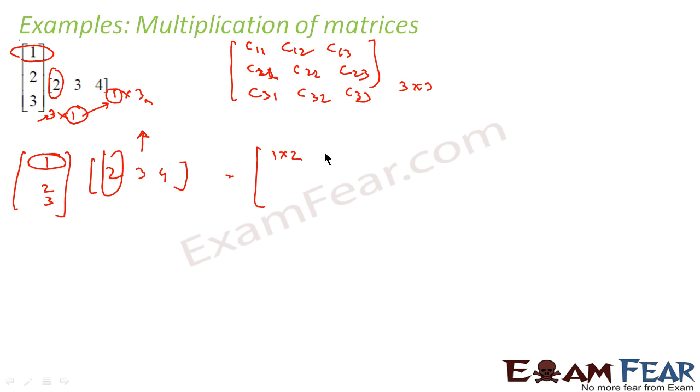Similarly c21, second row, first column. C22, second row, second column. C23, second row, third column.